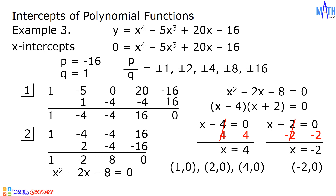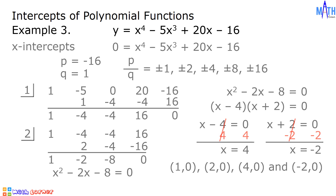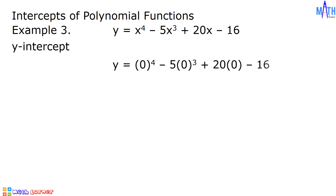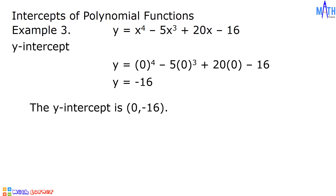The x-intercepts are 1, 0 and 2, 0 and 4, 0 and negative 2, 0. Next, let us find the y-intercept. If we set x equals 0, then we have y equals 0 raised to the 4th minus 5 times 0 cubed plus 20 times 0 minus 16. The value of y is equal to negative 16. The y-intercept is 0, negative 16.